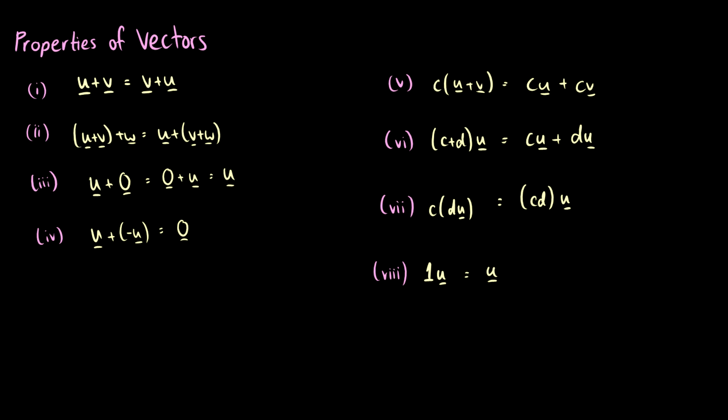The third property says if we take a vector u plus the zero vector, we just get the vector u back. The fourth one says if we take a vector u and we add negative u, we just get zero. So these are the addition properties — one, two, three, and four are addition properties.